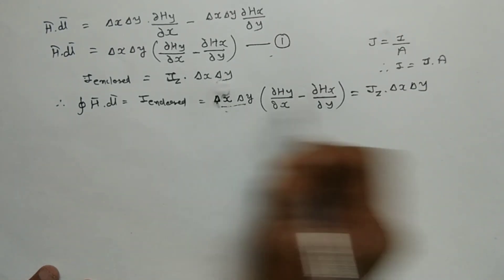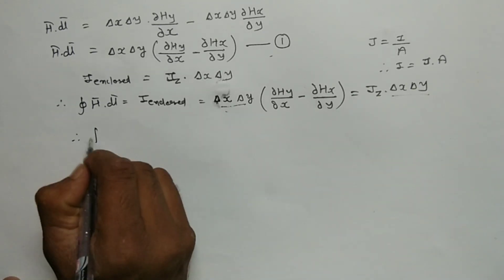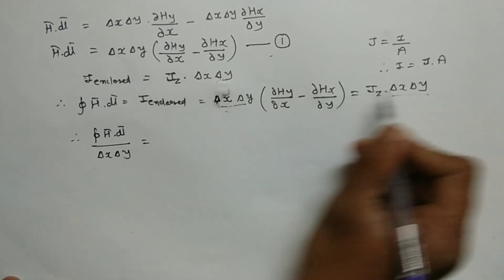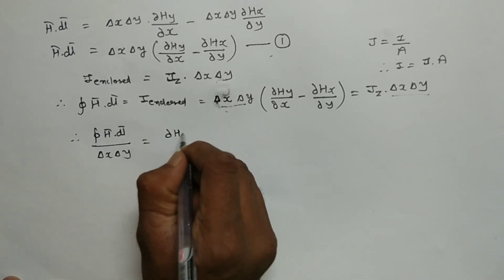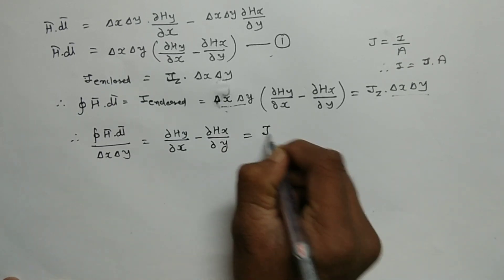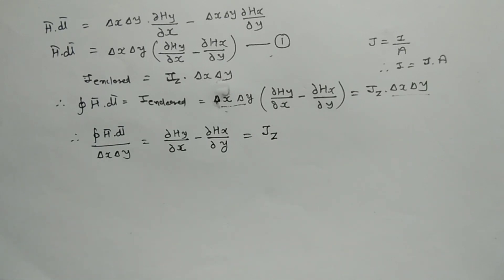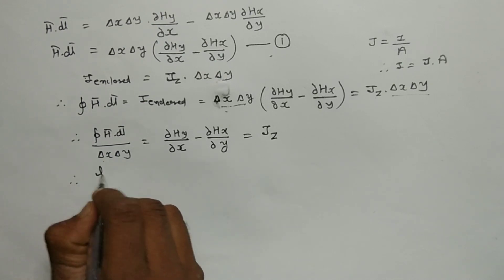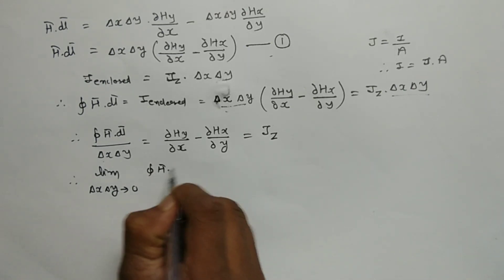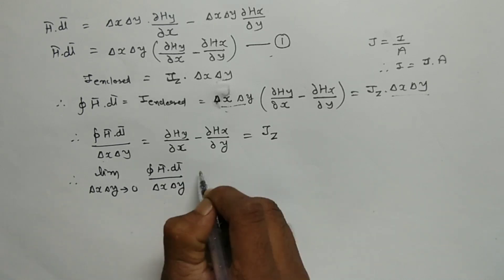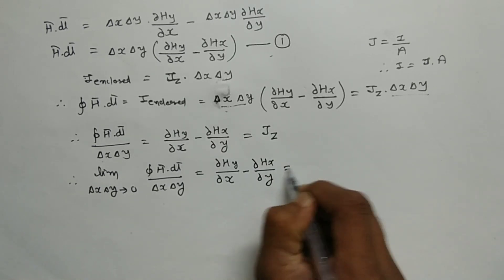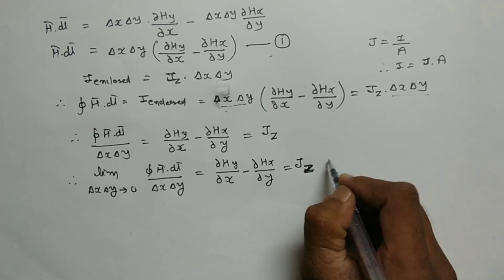Since delta X · delta Y is common on both sides, dividing through gives: the closed integral of H bar dot dL bar upon delta X · delta Y equals del Hy / del X minus del Hx / del Y equals Jz. That is equation number 2.